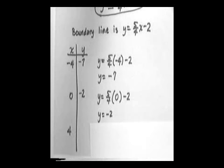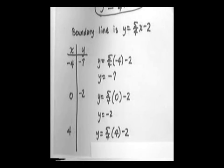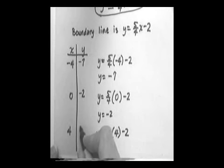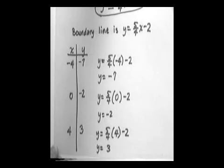For x equals 4: y equals 5 fourths times 4, minus 2. That gives us 20 fourths, which is 5, minus 2, equals 3. So the third point is 4, 3.